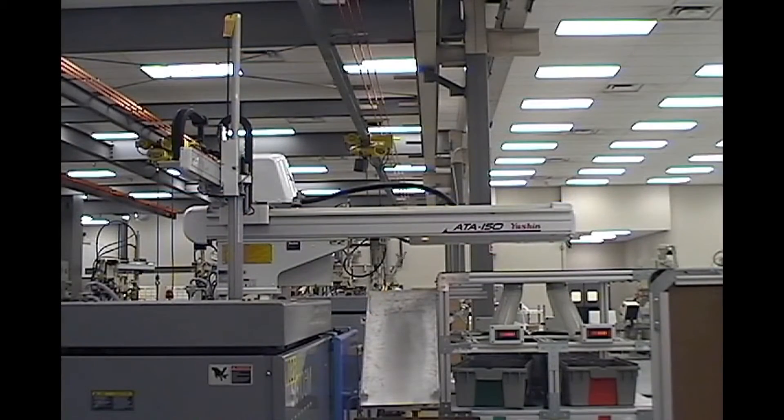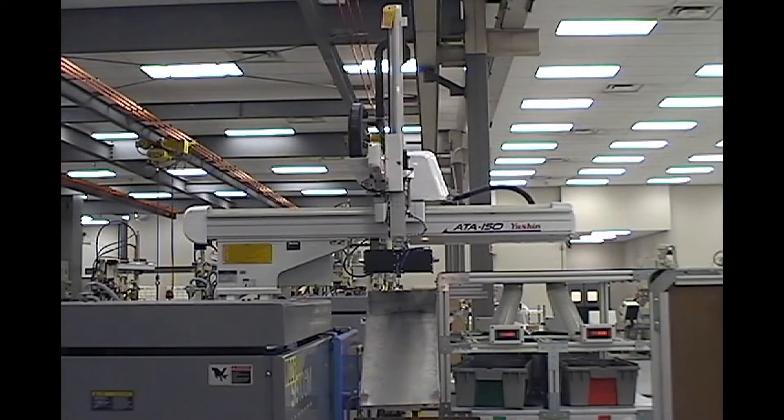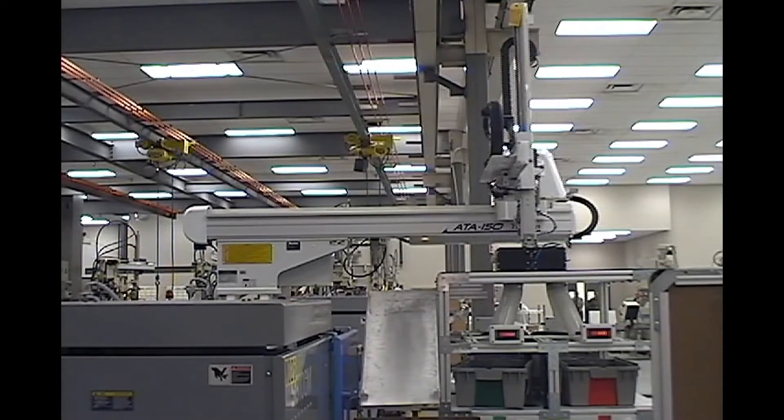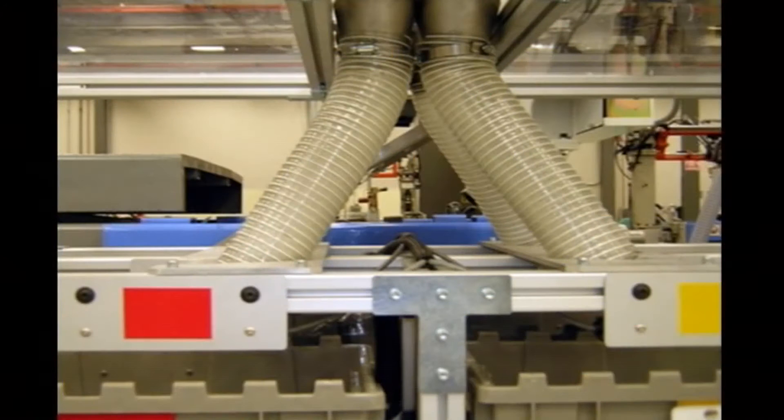The sprue is dropped onto a chute which feeds into a grinder, and then the captured parts are delivered to the distribution tower. The design of the EOAT allows for independent release of the parts and sprue. The simple but effective use of gravity ensures complete and effective part separation without any damage to the plastic parts.